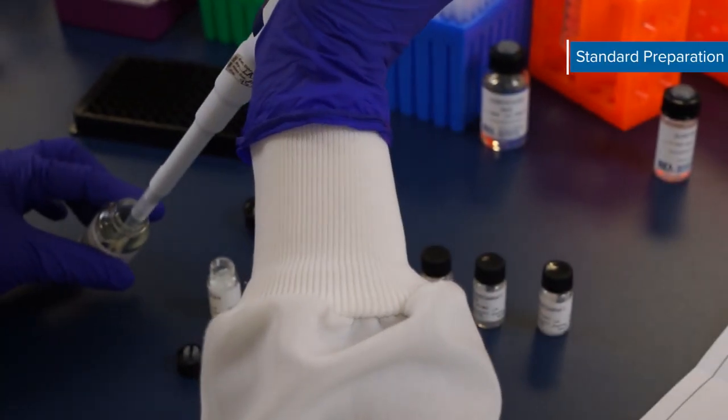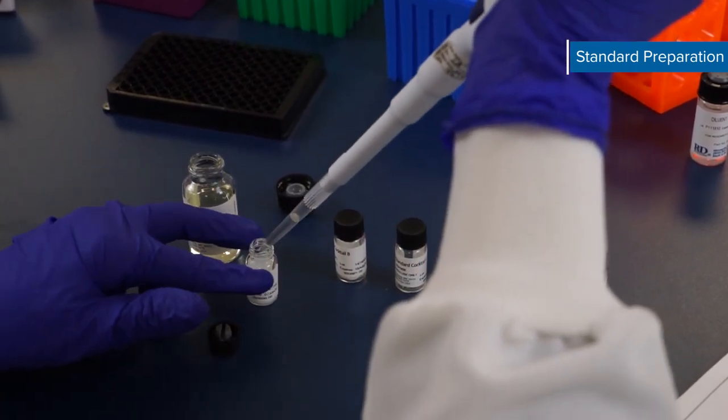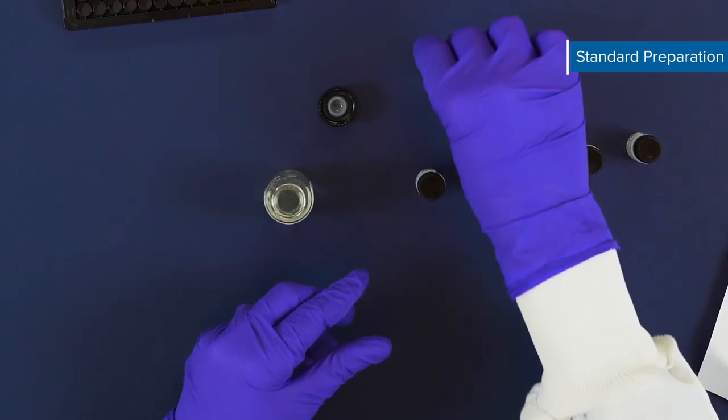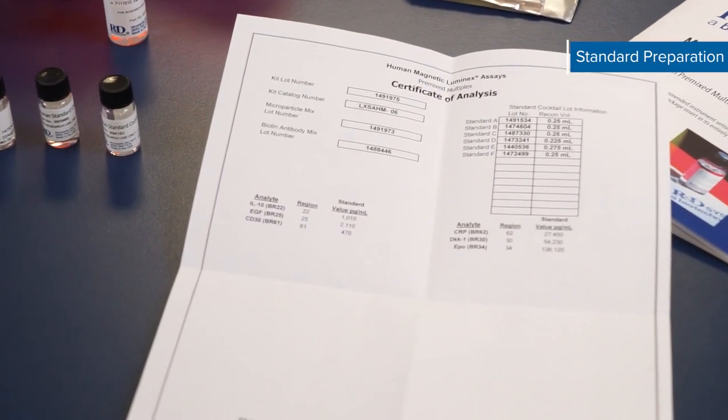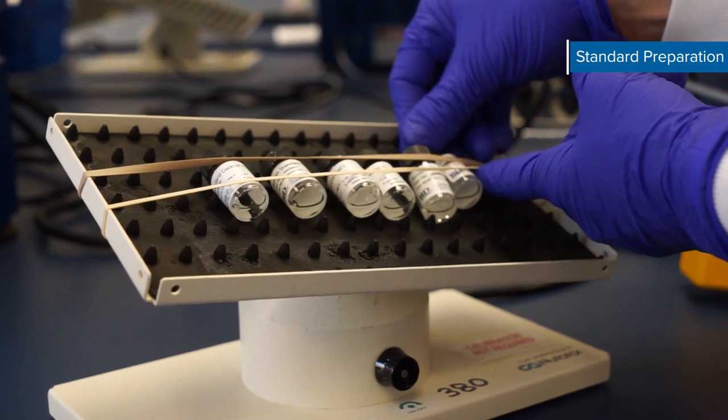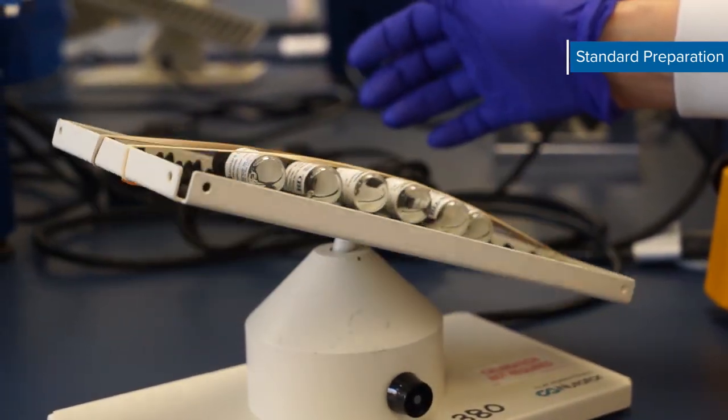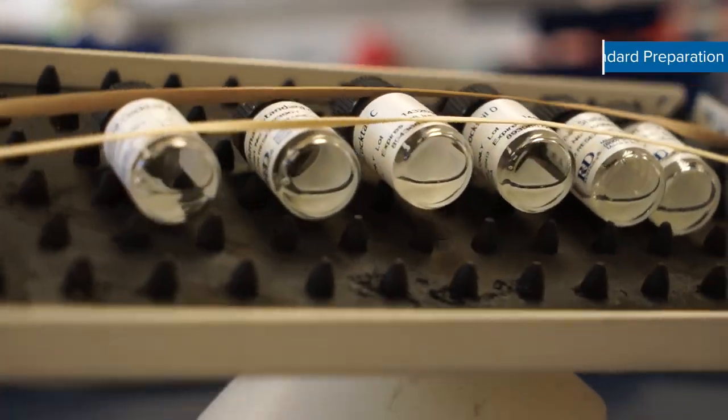The standards in your kit will differ depending on the analytes selected. Reconstitute each of the unique standard cocktails with the calibrator diluent provided in the kit. Refer to the certificate of analysis for reconstitution volumes. Allow the standard to sit a minimum of 15 minutes with gentle agitation prior to making dilutions. Do not vortex these standards.